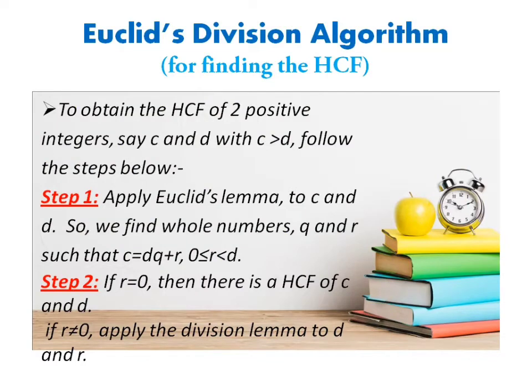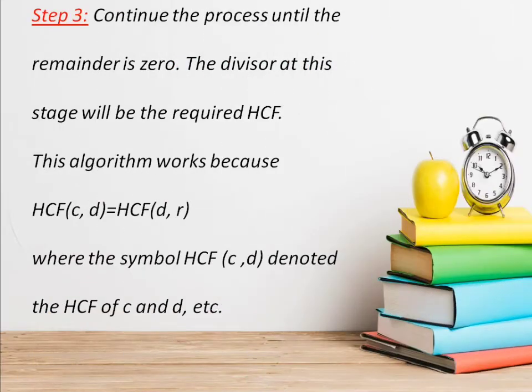Now Euclid's division algorithm is to find the HCF of the integers. We can do it in three steps. In step one, we apply the Lemma C is equal to DQ plus R. Now if remainder is equal to 0 then it's okay. Otherwise if remainder is not 0, again we apply the division Lemma. Continue this process until we get the remainder equal to 0. This algorithm works because HCF of C, D is equal to HCF of D, R.